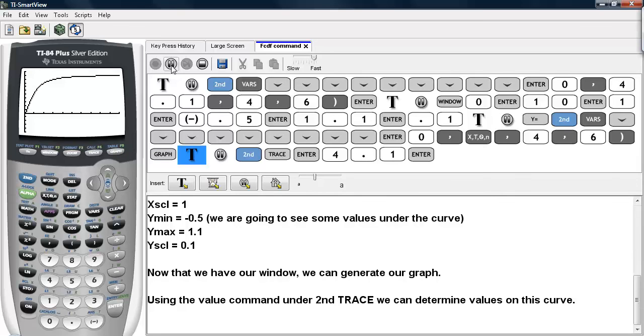And now that we have our graph, let's use the value command under the second trace buttons to determine values on this curve. So we'll hit second and trace, determine the value of 4.1.